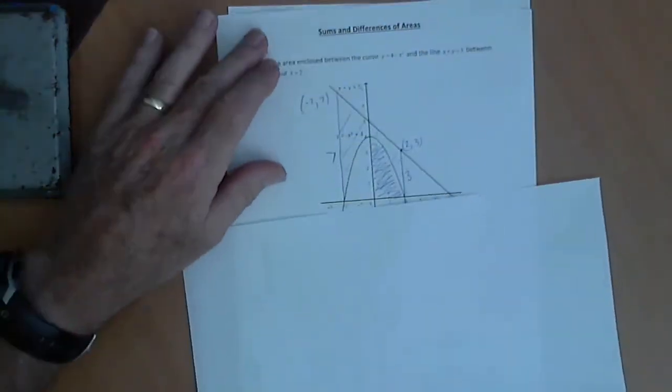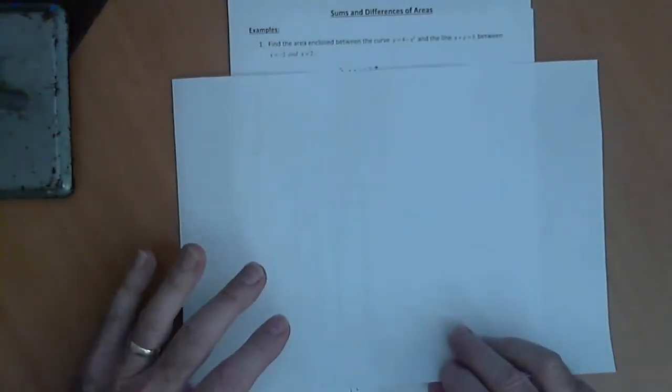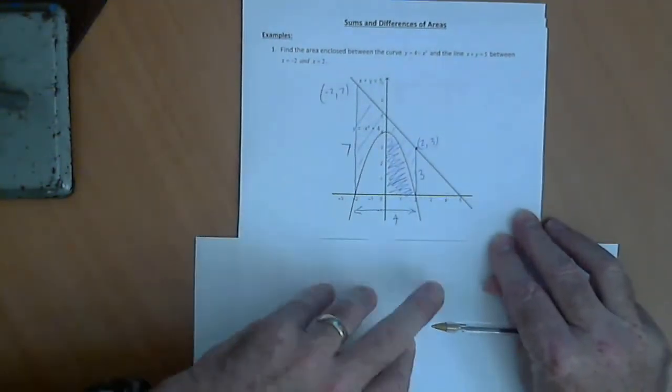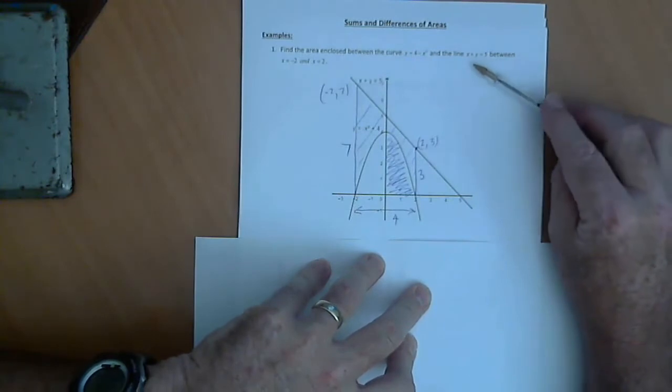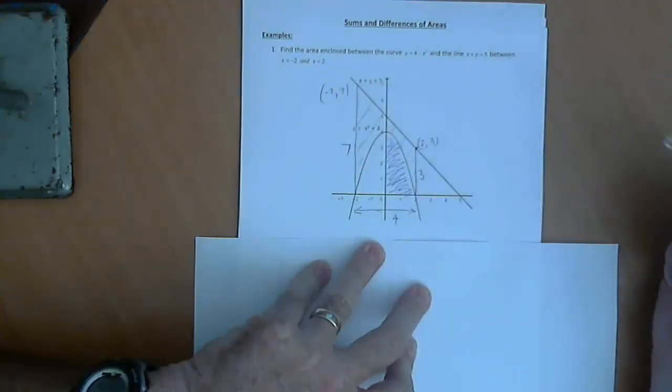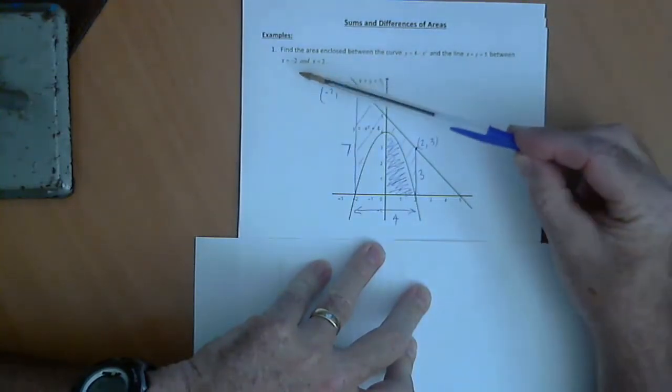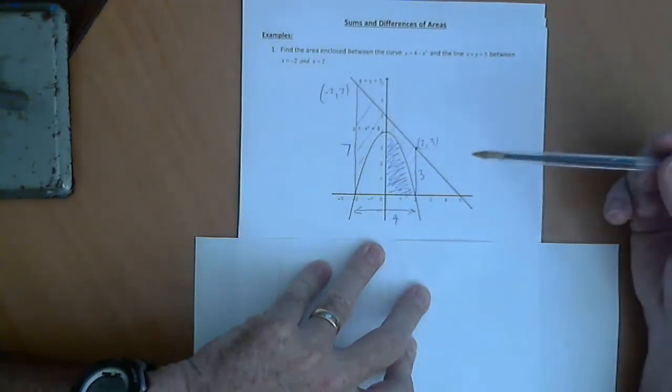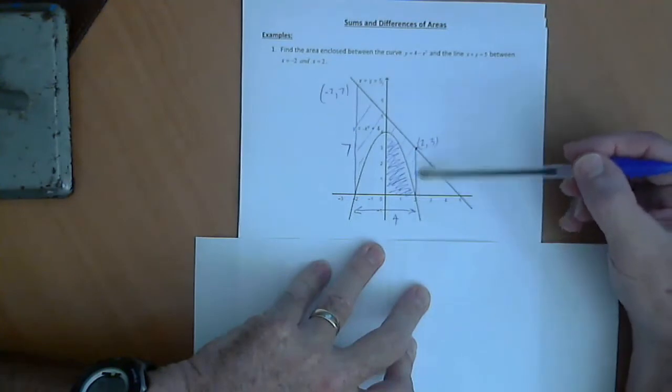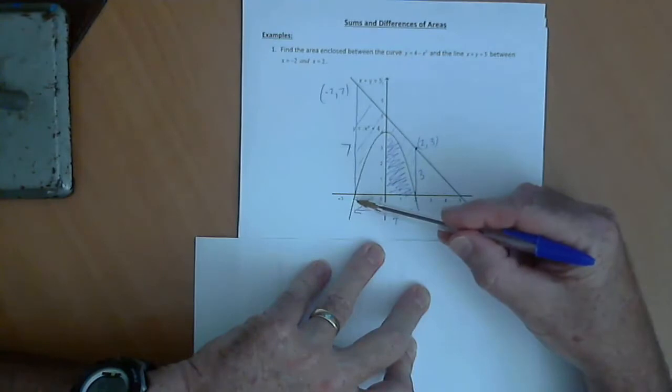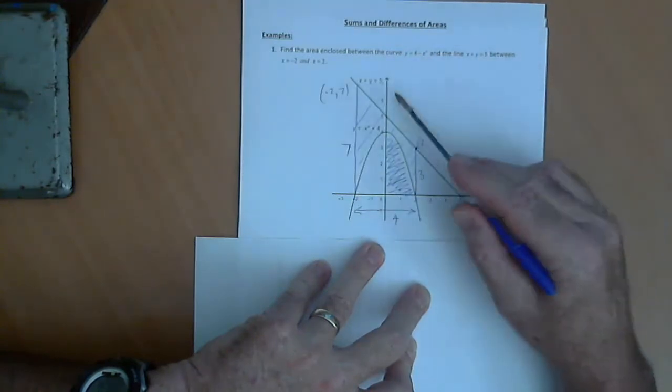Okay, so first example is we're going to have a look at the area enclosed between y equals 4 minus x squared and line x plus y equals 5 between x equals minus 2 and 2. Now, in the question, I've told you the x boundaries are between x equals minus 2 and 2. So, what we need to do first is work out how high these points are, which we do by substituting 2 and minus 2 into the equation of the line.